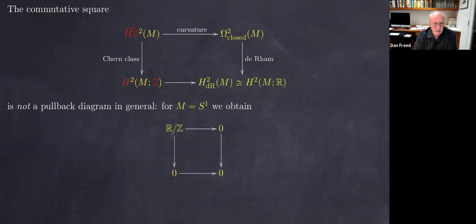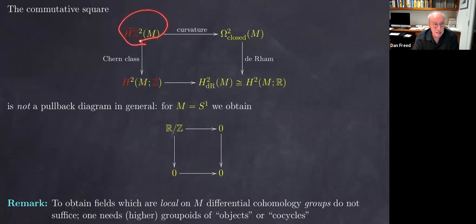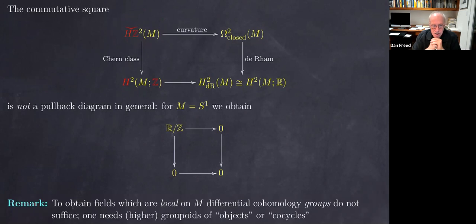Rather, it's a pullback in a more sophisticated sense — a kind of homotopy pullback where we don't pass to equivalence classes but take the whole theory at once. Both in geometry and in field theory, one wants objects that are local on a smooth manifold and satisfy some kind of sheaf condition. Equivalence classes usually never satisfy such a condition. So this differential cohomology group is not sufficient; you need objects you can glue together, which fit together into groupoids or higher groupoids. You need to remember the internal symmetries to get locality.